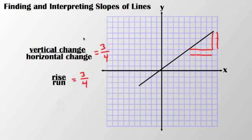Another term you're going to be familiar with is delta y over delta x, which really stands for the change in y over the change in x. All three of these — vertical change over horizontal change, rise over run, and delta y over delta x — mean exactly the same thing.